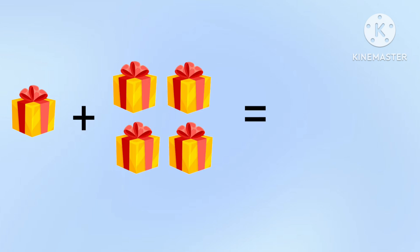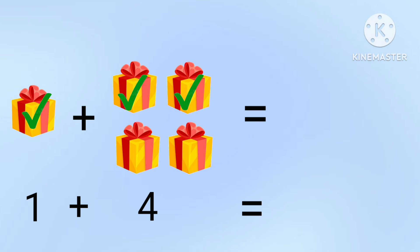Here we have 1 gift box and another 4 gift boxes added. So 1 plus 4 equal to? Let's start counting. 1, 2, 3, 4, 5. There are 5 gift boxes. So 1 plus 4 equal to 5.